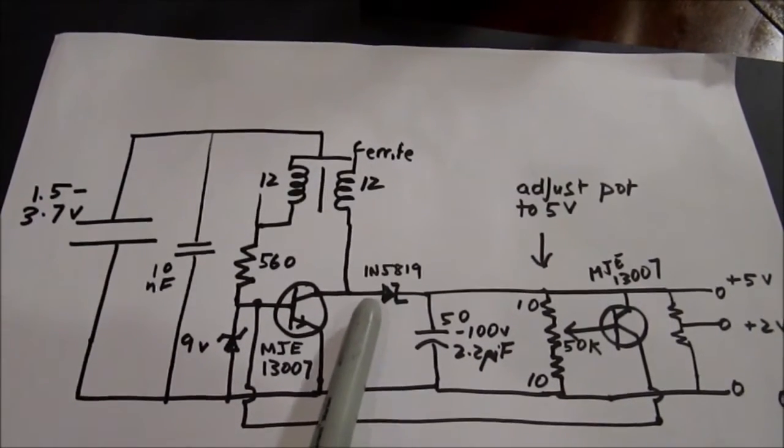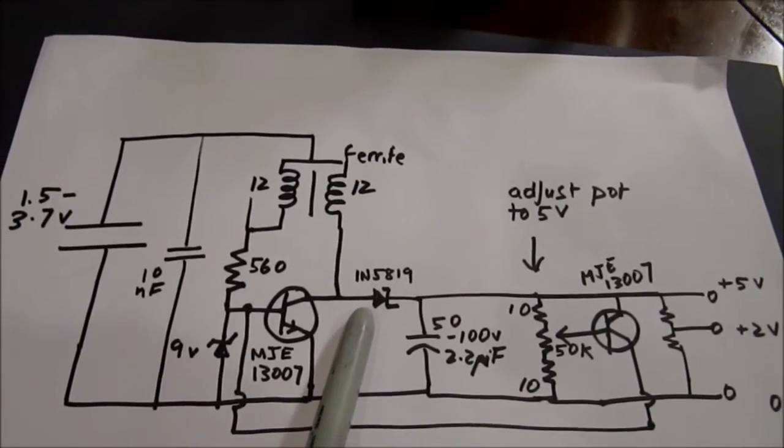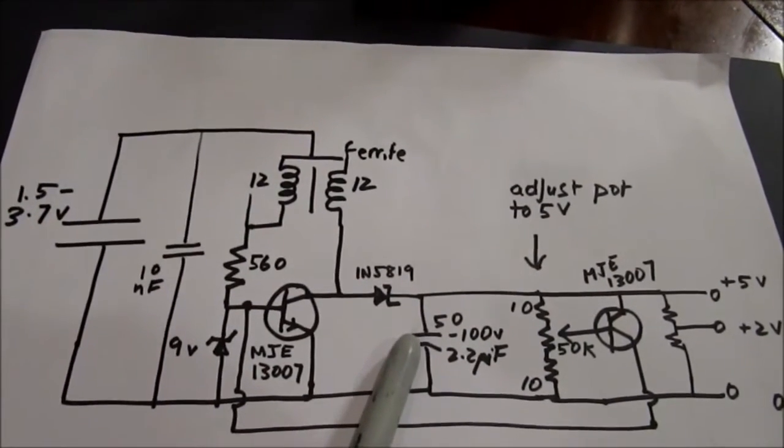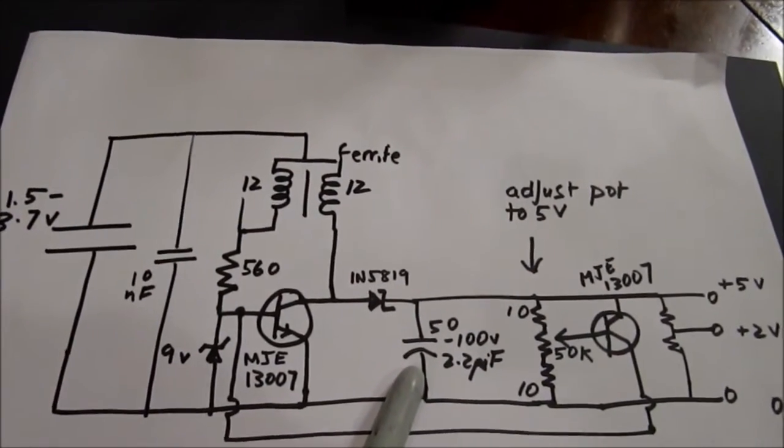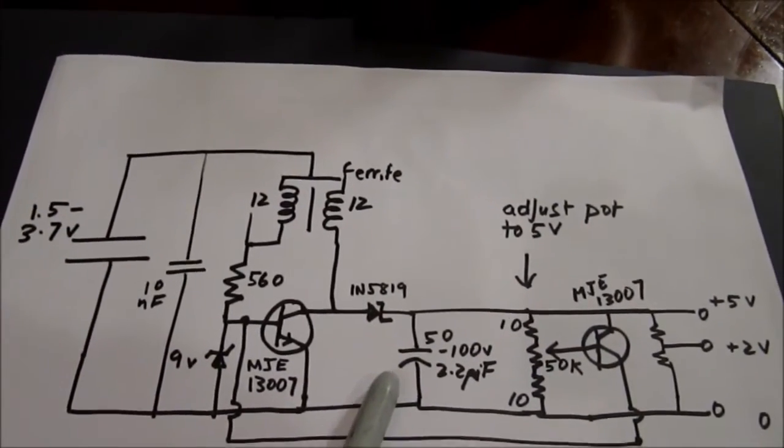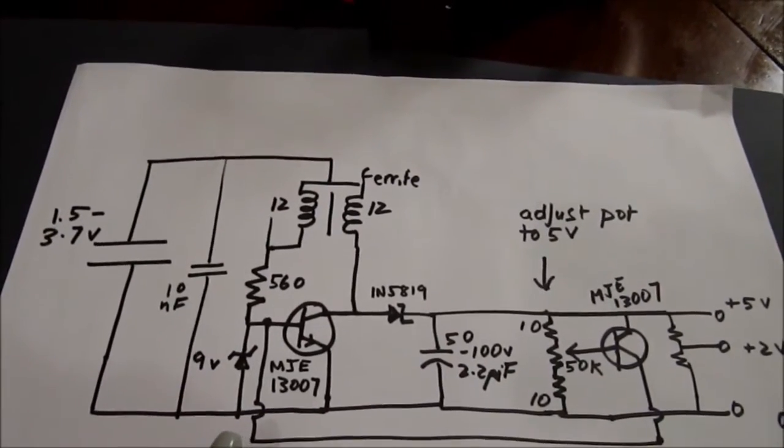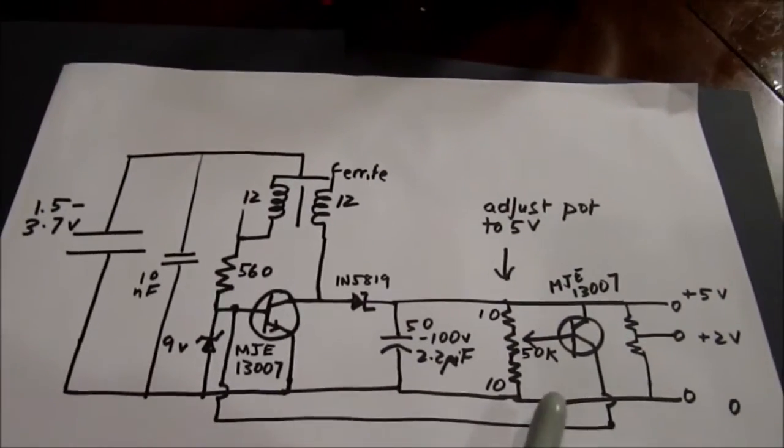The reason we use a Schottky diode is it has a low voltage drop, and you don't want to lose much of that voltage. The low voltage drop and the relatively fast response of these Schottky diodes is desirable. The energy is stored in this capacitor, which can charge up to 50 volts if the circuit is not regulated.